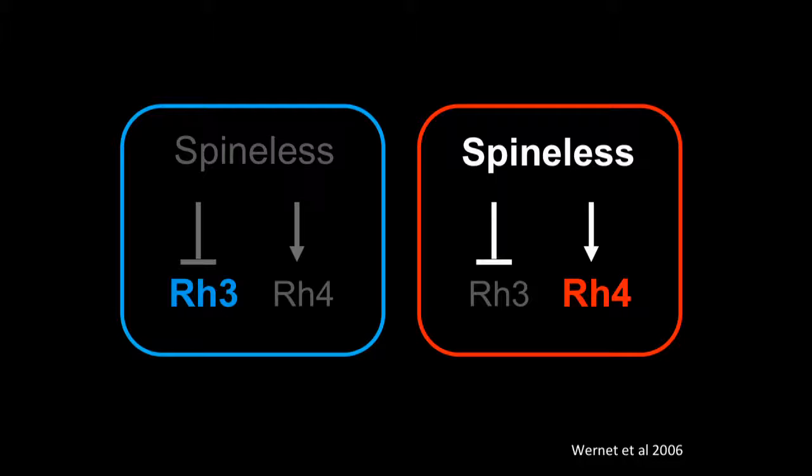In R7 cells that express spineless, we get activation of rhodopsin 4. In R7 cells that lack spineless, we get activation of rhodopsin 3. For the purposes of this talk, I'll be showing rhodopsin 4 as a direct output of spineless.